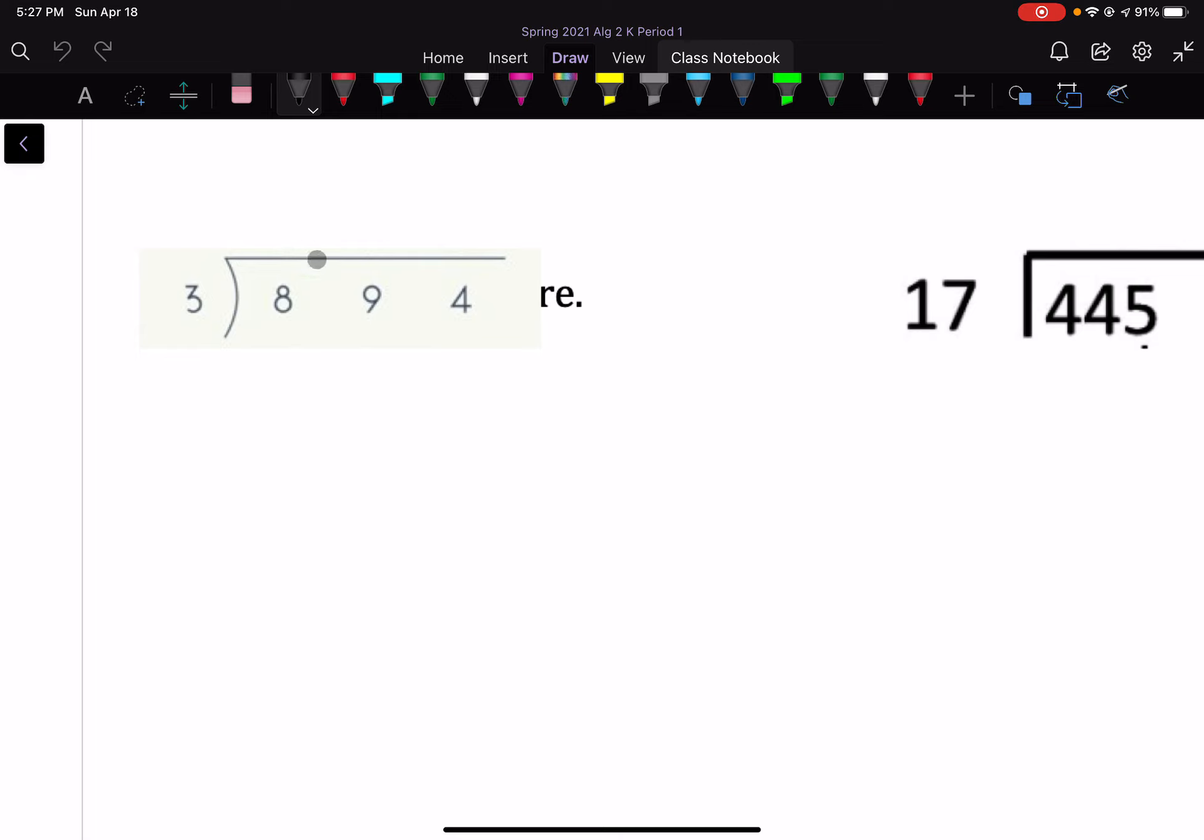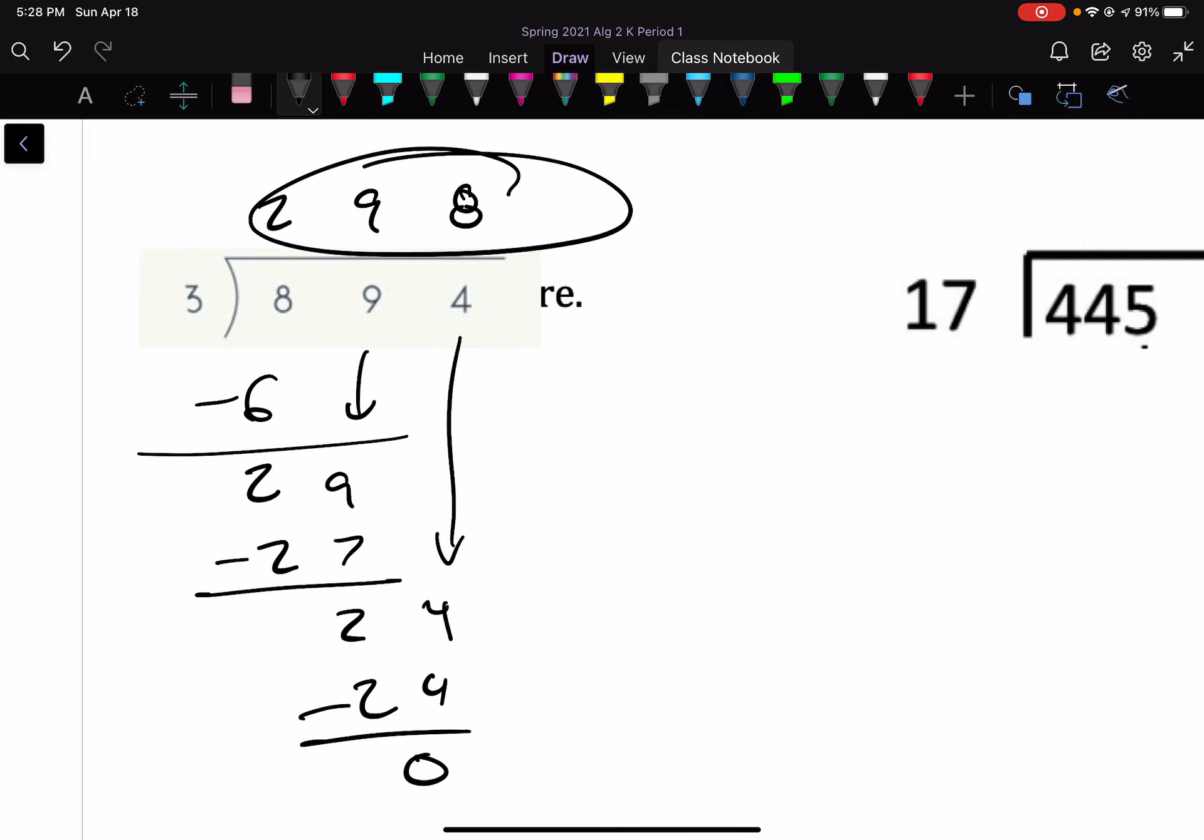Let's look at this one on the left here. We have 3 going into 894, and what you do is you take this 3 and say, how many times does 3 go into 8? Well, twice. Then, what's 2 times 3? That's 6. Then you subtract it, and you get 2. Bring down the 9, and you have 29 down here. How many times does 3 go into 29? 9 times. That's 27. Subtract that. You have a remainder of 2. Bring down the 4. 24. How many times does 3 go into 24? That's 8 times, and that's 24. So we don't have any remainder. So our answer is 298.